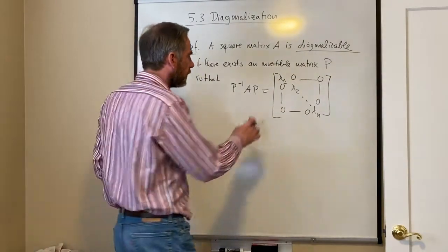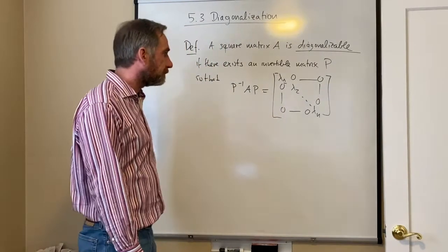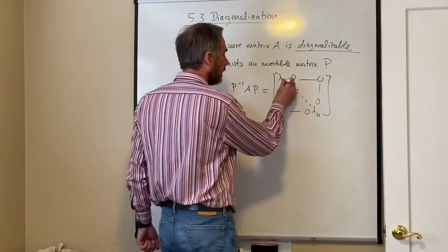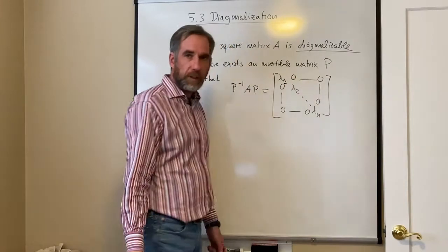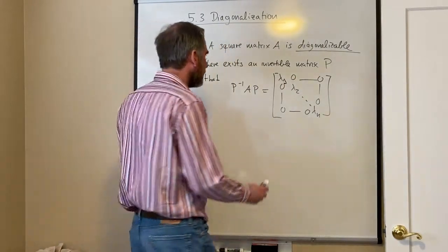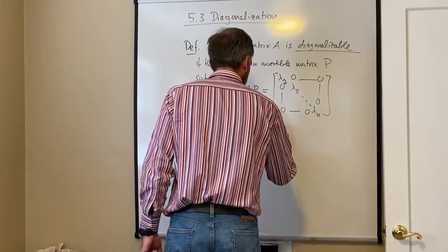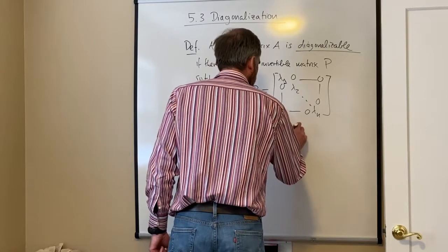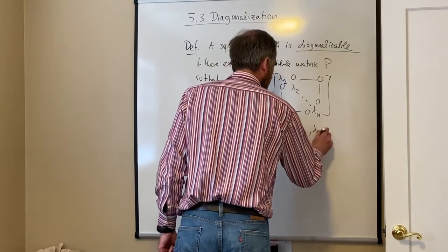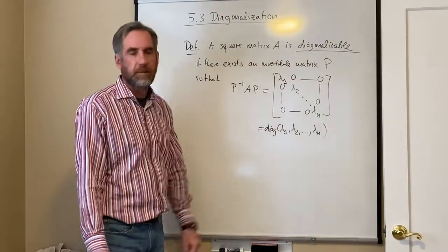The notation using lambda for the diagonal elements seems to indicate these will be eigenvalues, and they will be — but we're not quite there yet. This is the idea of diagonalization. For short, I will write a diagonal matrix with these elements on the diagonal simply in compact notation.